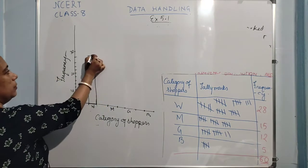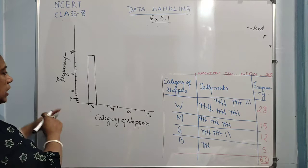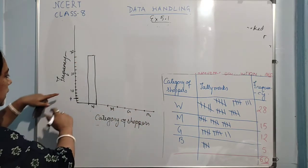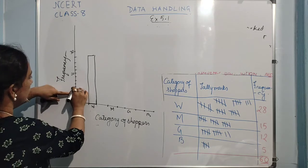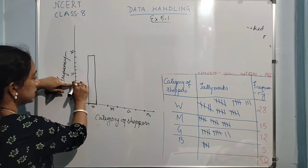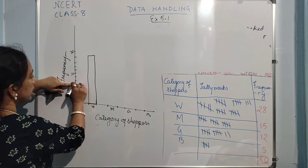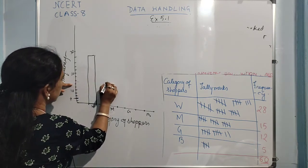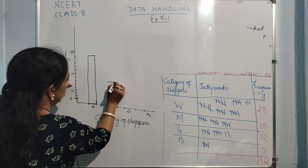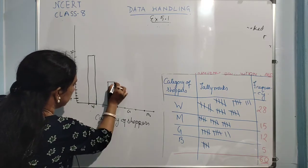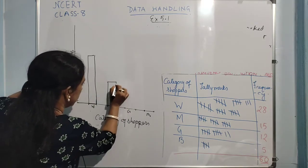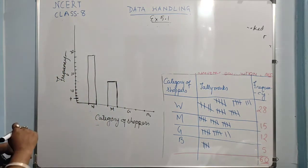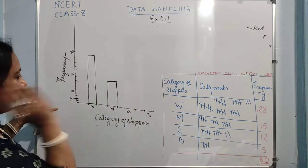Just like that you will be making the bar — this becomes our bar for women at 28. Now for men, frequency is 15. If this is my 10, then 12, 14, after that 16 — so in between 14 and 16, the value 15 will be lying somewhere here. You have to take that point and draw the bar for men like this. For girls, the frequency is 12 — if 10 is here, then 12 is just here.